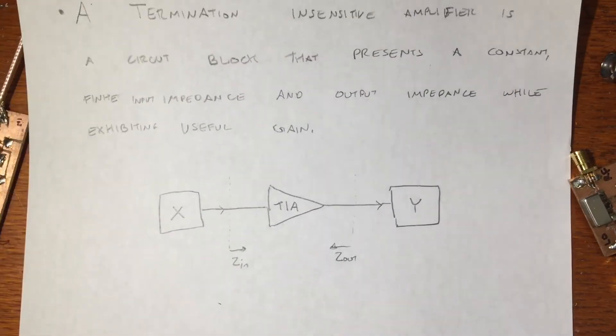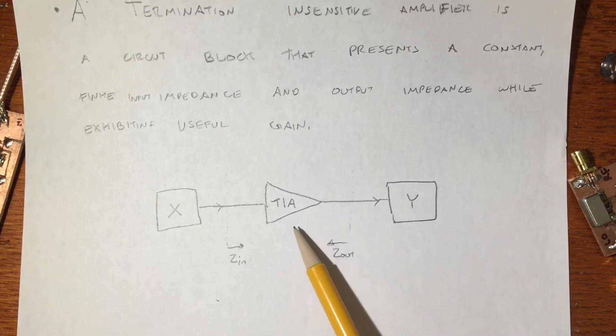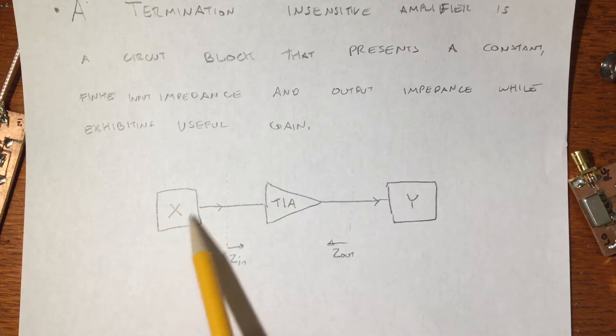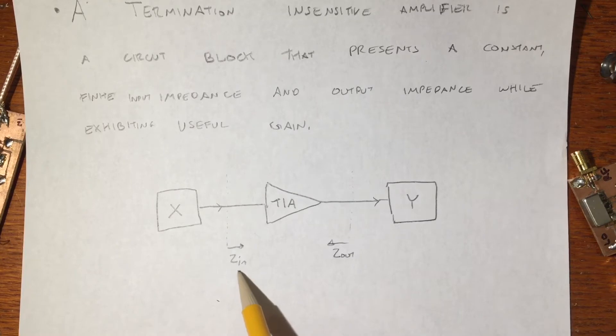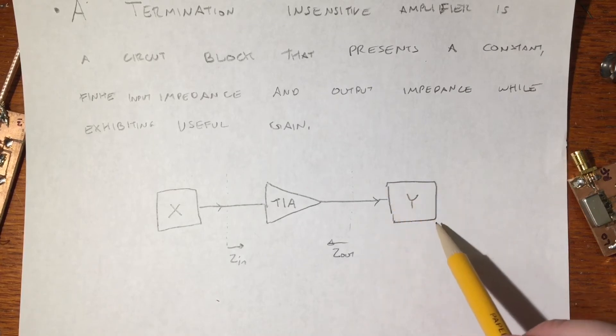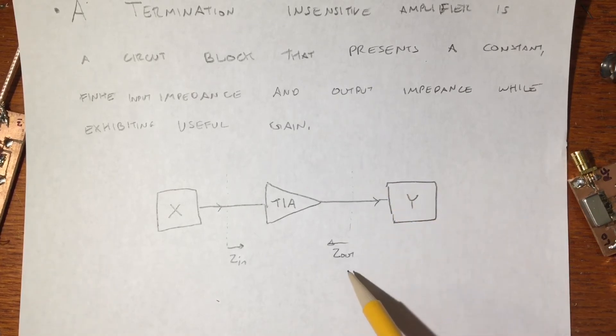So to put it another way, if I have a block diagram here with my termination-insensitive amplifier right in the middle there, that no matter what the characteristic impedance of the preceding block here, this X block, is, you will always see a constant impedance looking into the amplifier, let me call that Z in, and whatever I hang off the output end of the amplifier here, this Y block, will constantly be fed with a constant output impedance, this is called Z out for this case.